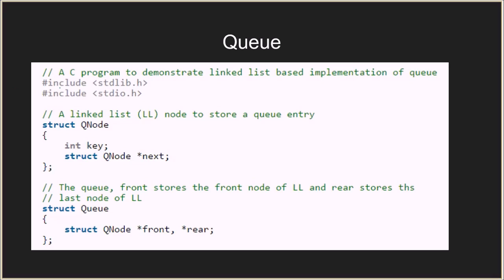Let's look at the implementation. This C program demonstrates the linked list based implementation of the queue. It starts with two header files, then we have a structure called queue node. Queue node is the structure required at each node — every node in the linked list will be of type struct queue node and will have two elements: int key, which is the value stored in the node, and a pointer to the next node.